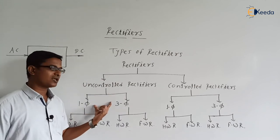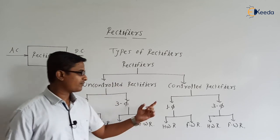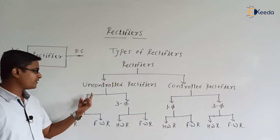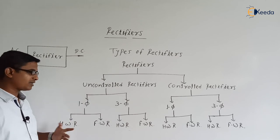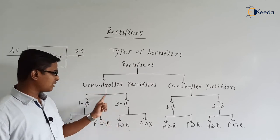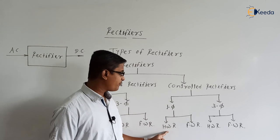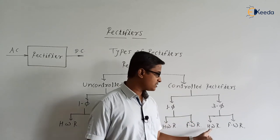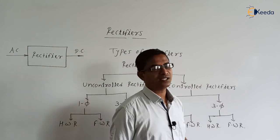Uncontrolled rectifiers are classified into two types: single phase uncontrolled rectifier and three phase uncontrolled rectifier. Controlled rectifiers are classified into single phase controlled rectifier and three phase controlled rectifier. The single phase uncontrolled rectifier has two types: single phase half wave uncontrolled rectifier and single phase full wave uncontrolled rectifier. Three phase types include: three phase half wave uncontrolled rectifier, three phase full wave uncontrolled rectifier, single phase half wave controlled rectifier, single phase full wave controlled rectifier, three phase half wave controlled rectifier, and three phase full wave controlled rectifier.